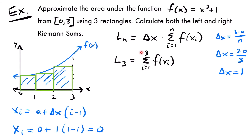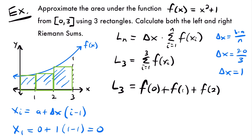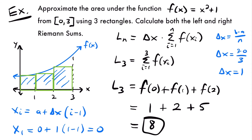L sub 3 equals f of 0 plus f of 1 plus f of 2. Plugging in: f(0) = 0 squared plus 1 = 1; f(1) = 1 squared plus 1 = 2; f(2) = 2 squared plus 1 = 5. So the area equals 1 plus 2 plus 5, which equals 8. That is L sub 3 — the approximate area using 3 rectangles and left endpoints.